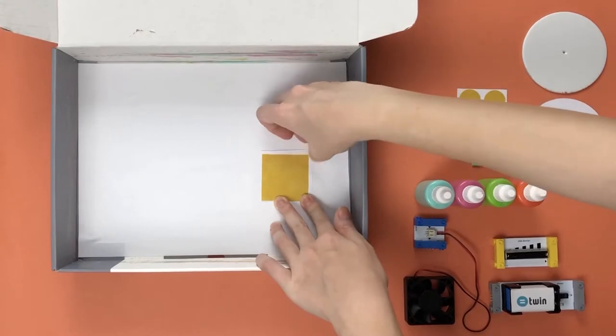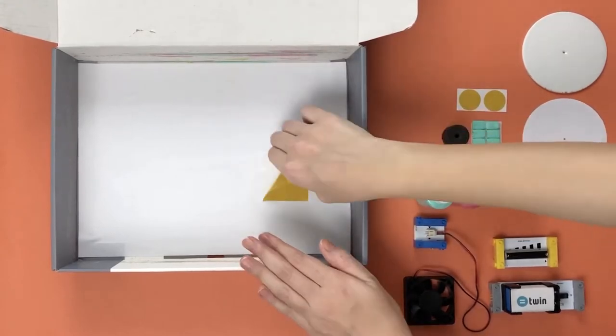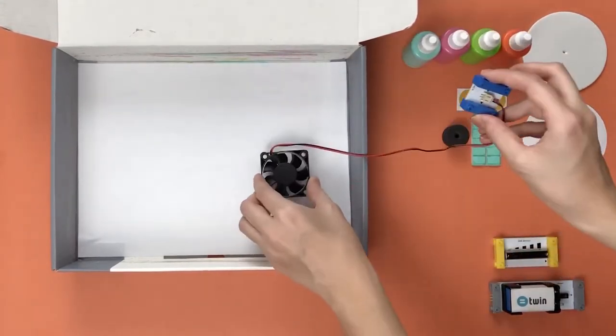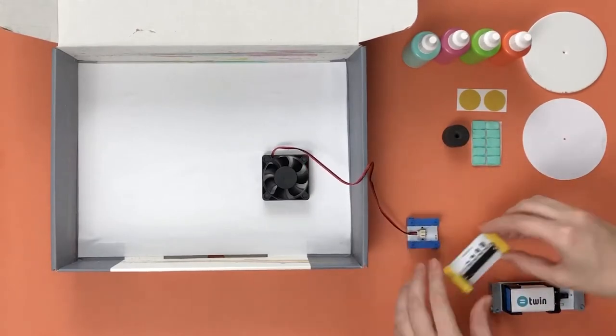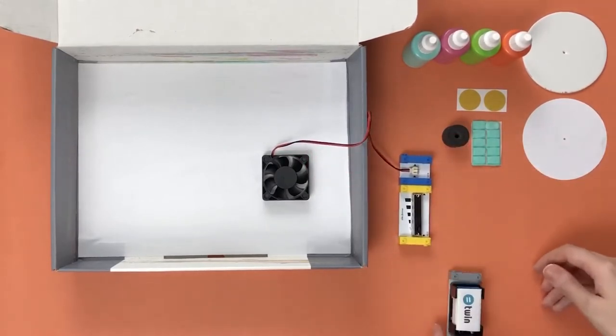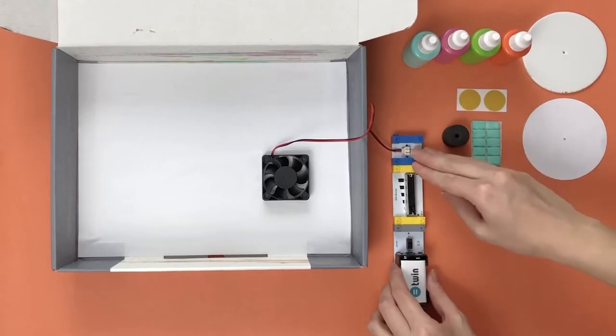Empty the Robotic Art Kit box. Use a square double-sided tape to place the fan in the middle of the box. Connect the power module, the slide dimmer, and the fan next to each other.